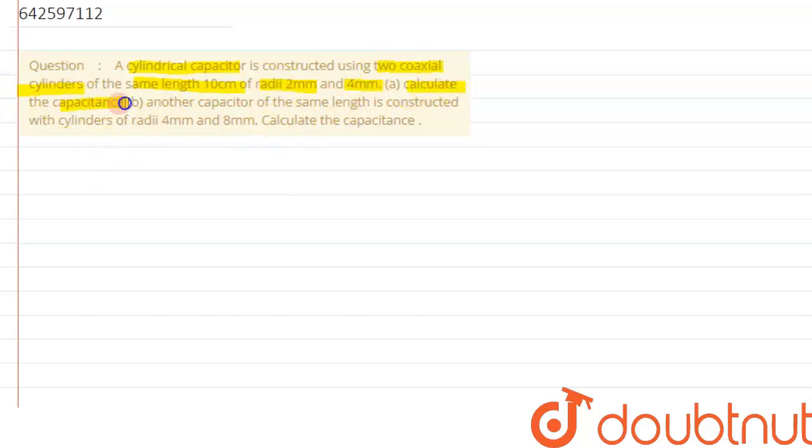We need to first calculate the capacitance and second, another capacitor of same length is constructed with cylinders of radii 4 mm and 8 mm. We need to calculate the capacitance for this capacitor.